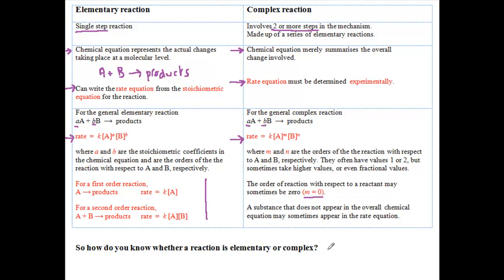Fast reactions involving a radical are generally elementary. Reactions of the type A plus B plus C or A plus 2B are always complex because the probability of more than two molecules colliding simultaneously is very low.